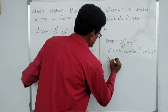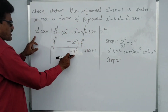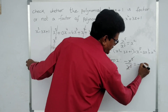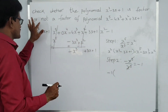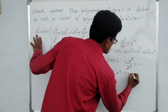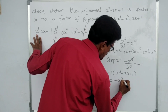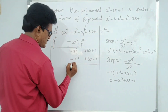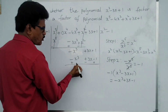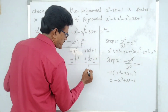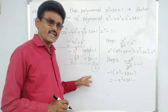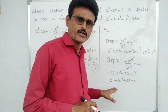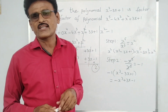Step two: minus x³ divided by x³ gives minus 1. Write minus 1. Minus 1 into (x³ minus 3x plus 1): minus x³ plus 3x minus 1. Do subtraction — change symbols — minus x³ and plus x³ cancel; plus 3x minus 3x also cancels; 1 plus 1 gives remainder 2. Since the remainder is 2, not zero, the cubic polynomial is not a factor of the fifth-degree polynomial according to the factor theorem. Please like, share, comment, and subscribe.